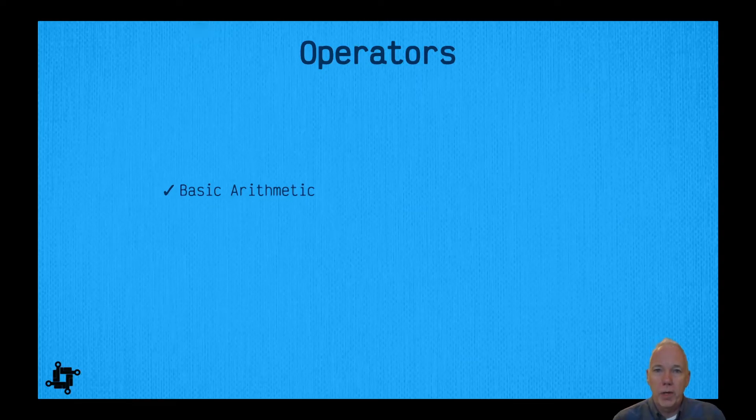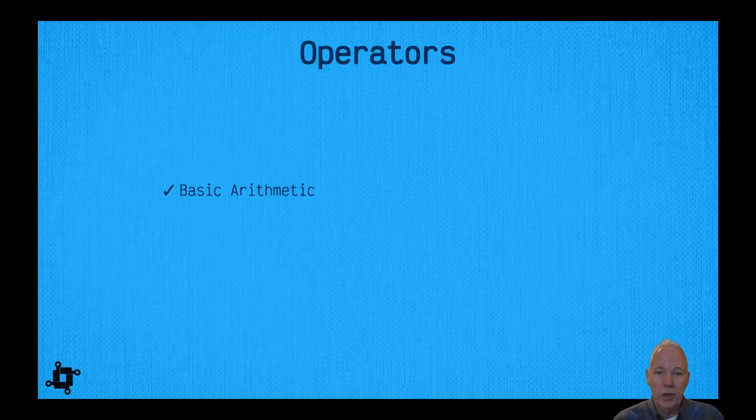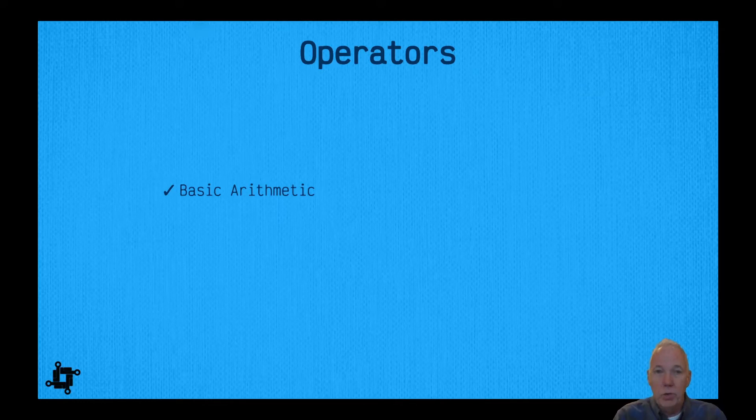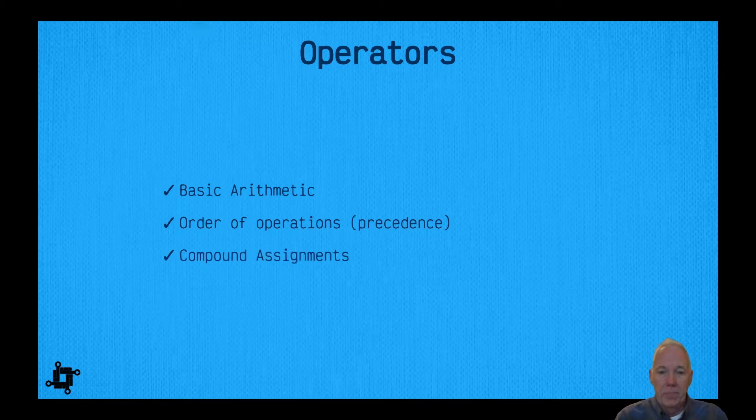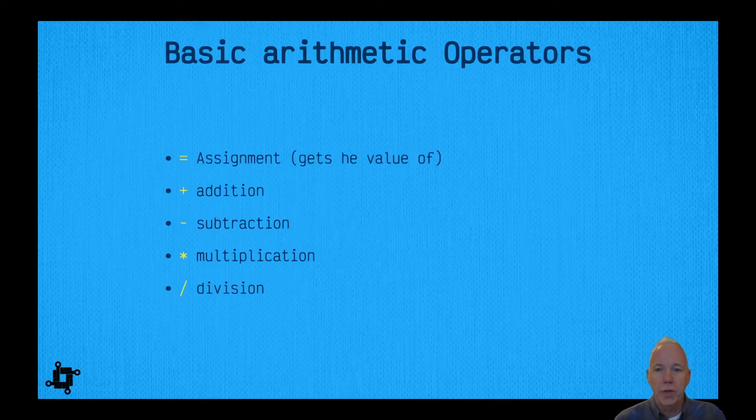Ultimately this one should be a no-brainer, so let's get started. In our operators module, we're going to cover three items: first, the basic arithmetic operators and how to code them in Swift; second, order of operations or precedence, which is identical to what you would have covered in basic math class; and third, compound assignments and how to use those.